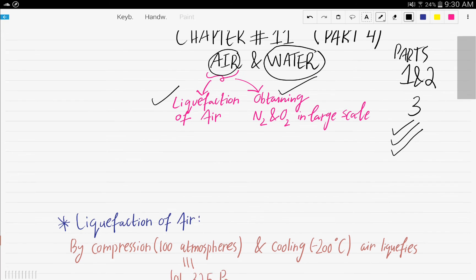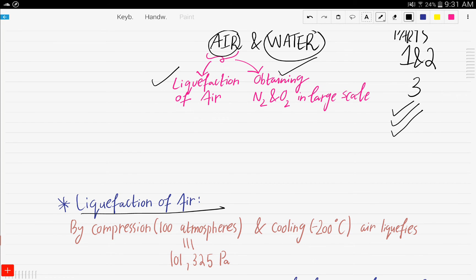First is the liquefaction of air by compression at 100 atmospheres. One atmosphere is equivalent to 101,325 pascals. Of course, you don't need to know that, but it's just to give you an idea of how large 100 atmospheres is, because most of you know pascal from physics. By cooling to negative 200 degrees Celsius, air liquefies. Pretty easy: two conditions - 100 atmospheres and negative 200 degrees Celsius - and the air liquefies.